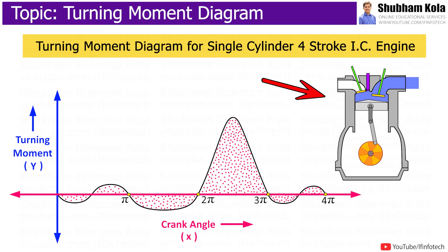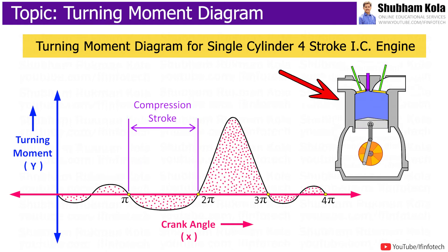Since the pressure inside the engine cylinder is less than atmospheric pressure during suction stroke, negative loop is formed and during compression stroke, the work is done on gases, therefore higher negative loop is obtained.